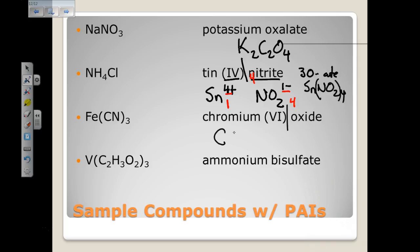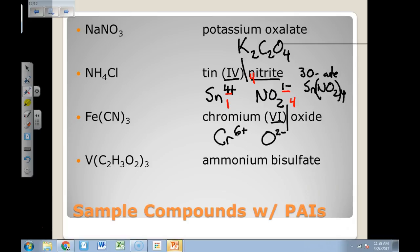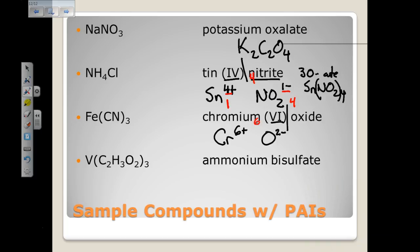For chromium(VI) oxide: chromium is the cation with charge six plus, and oxide is O²⁻. Using the least common multiple method: the LCM of two and six is six, so we need one chromium and three oxygens. The formula is CrO3. The LCM method will work all of the time, unlike a crisscross method which only works most of the time.